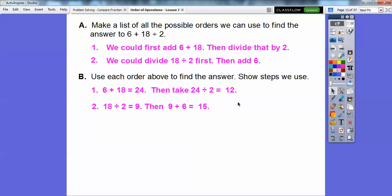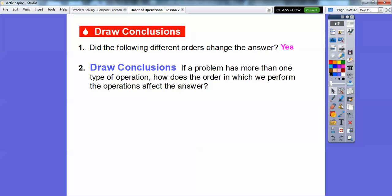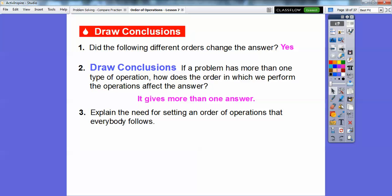See, we get 12 or 15. So we need some kind of thing that's what's called an order of operations, so we can all get the same answer as long as we follow the same rules. Did the following different orders change your answer? Well, it sure did. We had, I think it was 12 and 15.